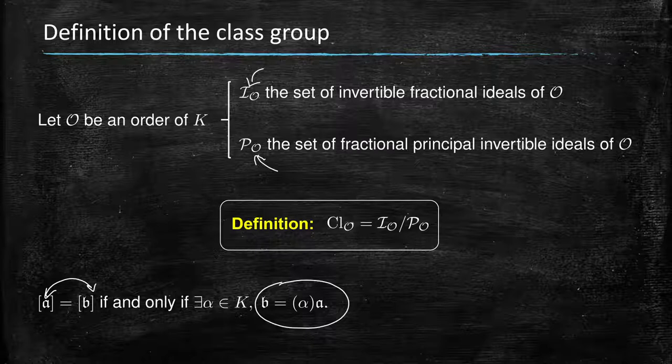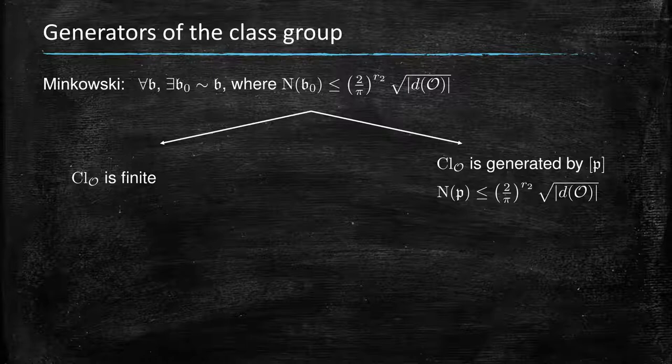Now, one first important feature of the class group is that it is a finite group. So how do we see this? By Minkowski theory that tells you that for all fractional ideals B, there exists another fractional ideal B_0, actually an integral ideal...